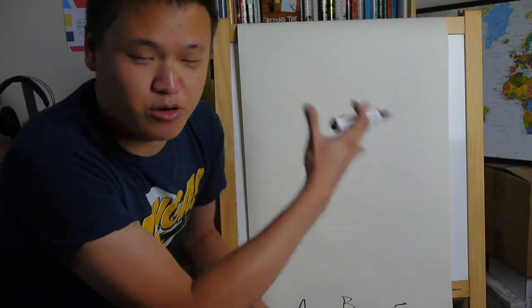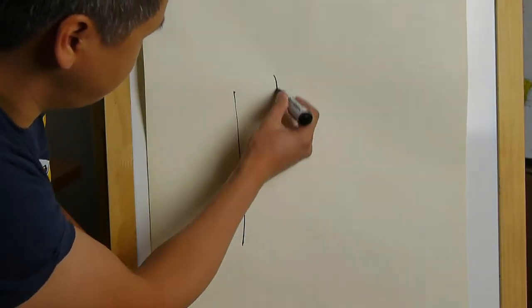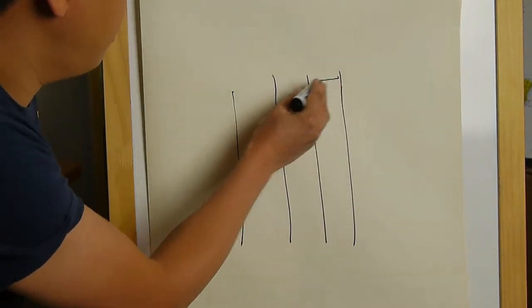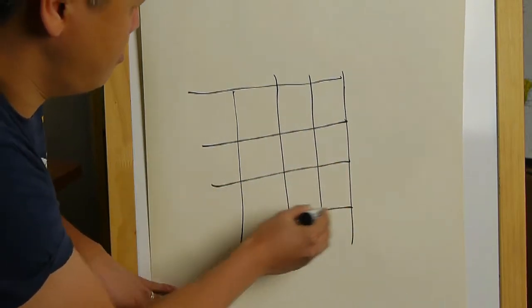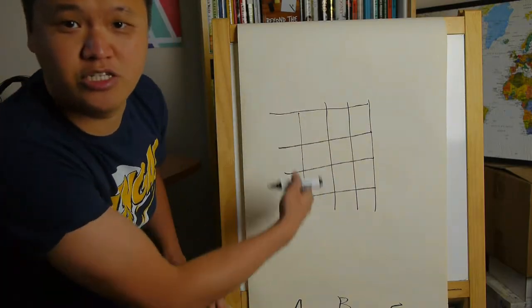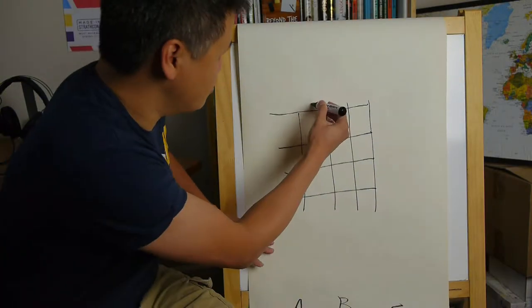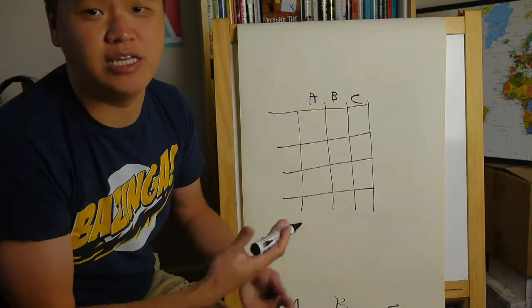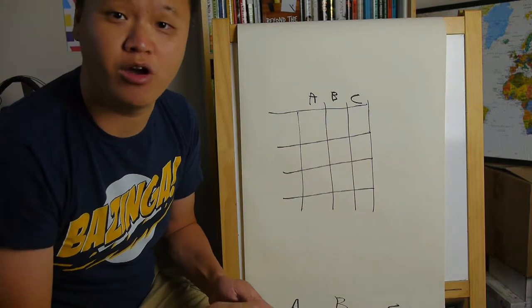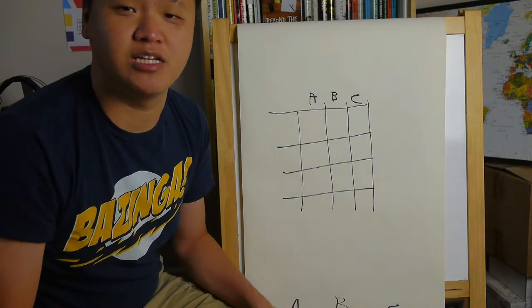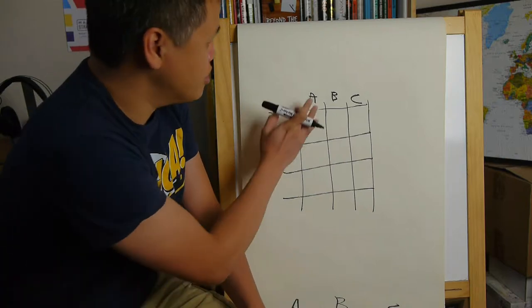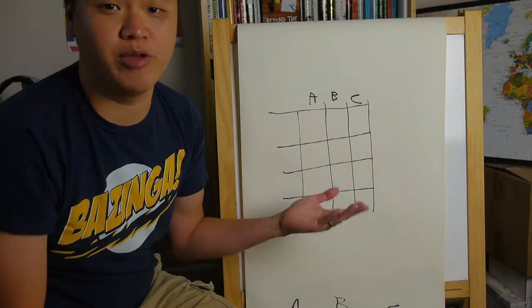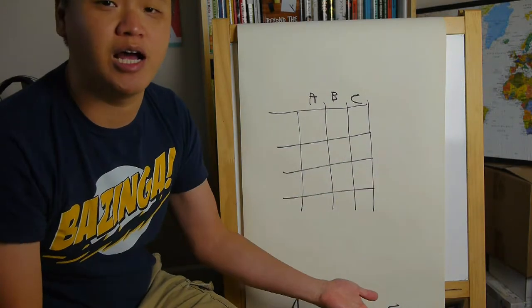So let me draw up a quick grid here. So we'll say that each of the three columns is a door. So again, A, B, and C. And then each row represents each time that we try to win the car. Under all these circumstances, just for the sake of simplicity, we'll say that the car is always actually behind door A. But it works out exactly the same if you put the car behind B and C, just three times over.